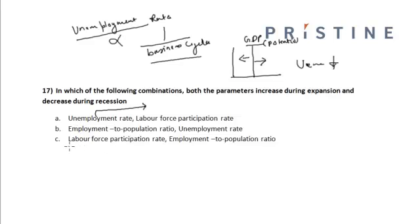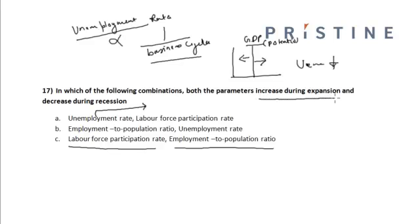The other two parameters — the labor force participation rate and the employment-to-population ratio — are directly proportional to the business cycle. Both parameters increase during expansion and decrease during recession. Hence, the correct option is Option C.